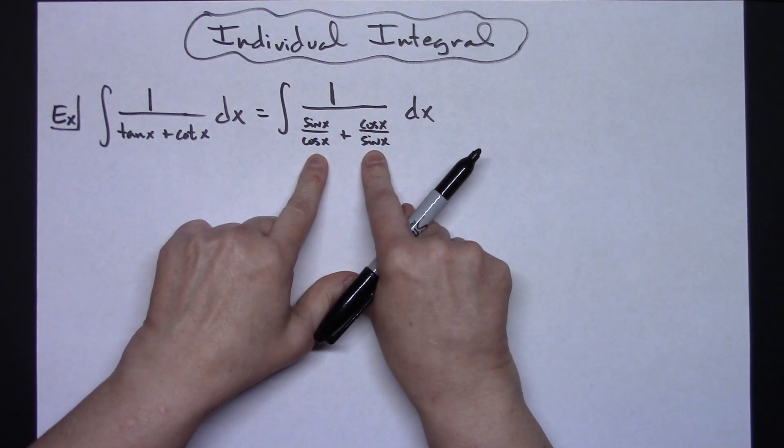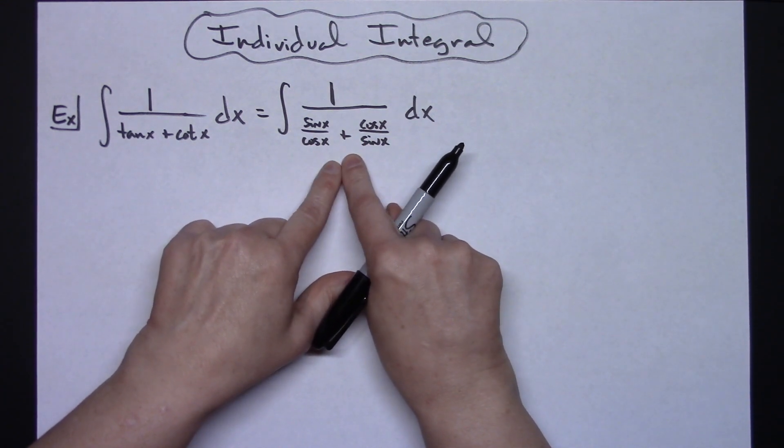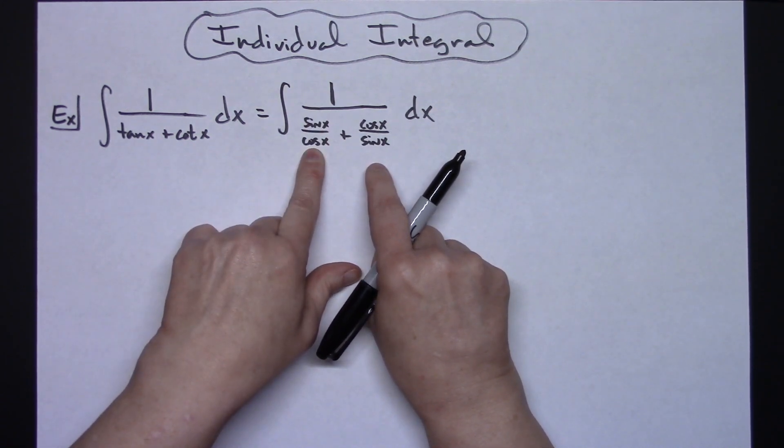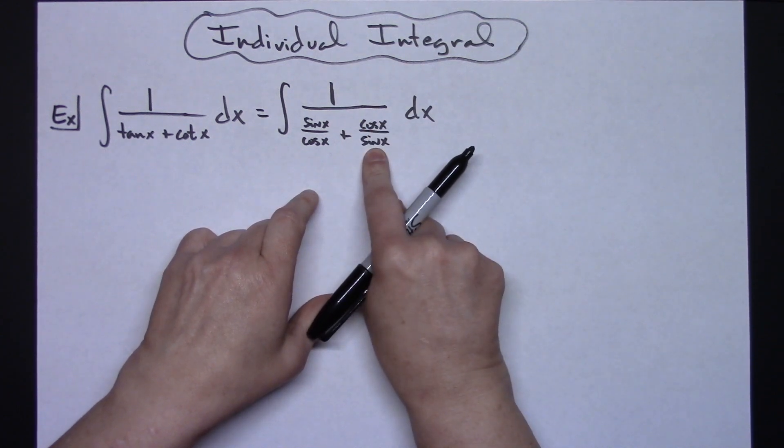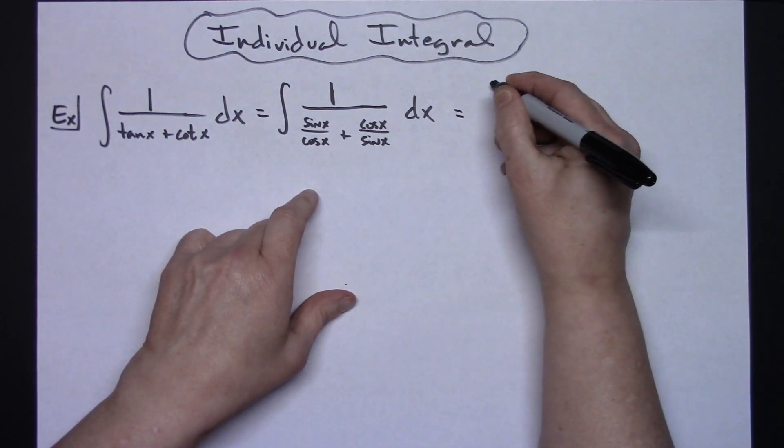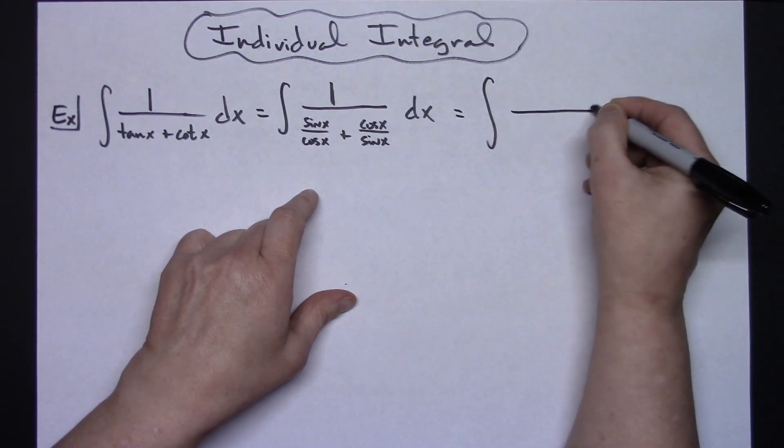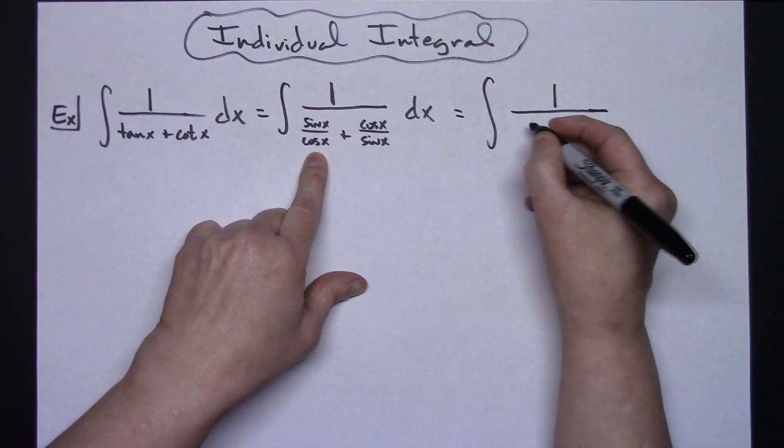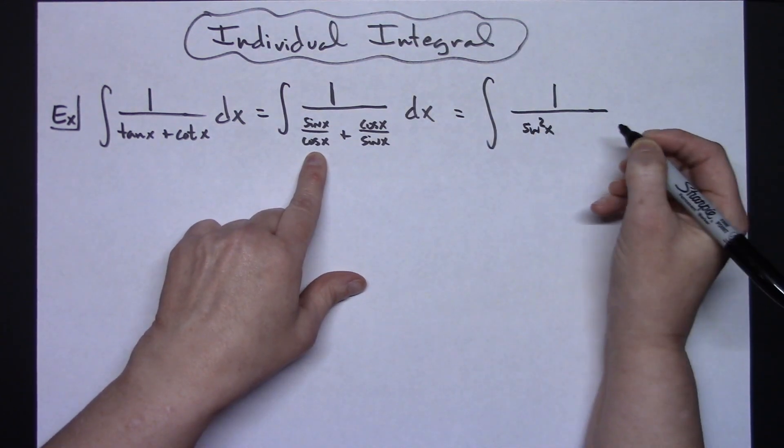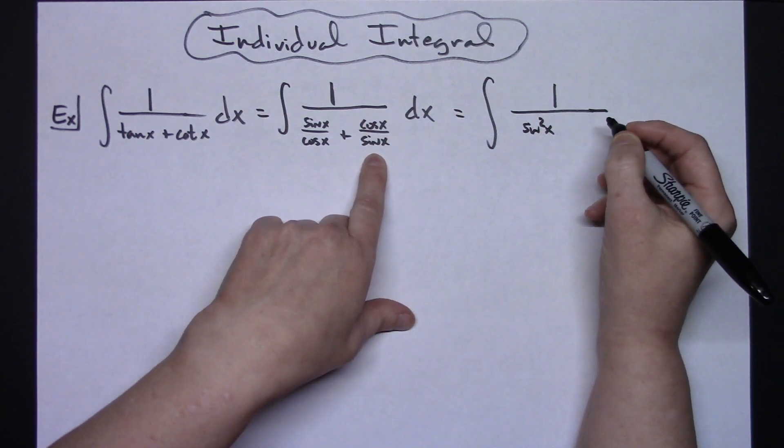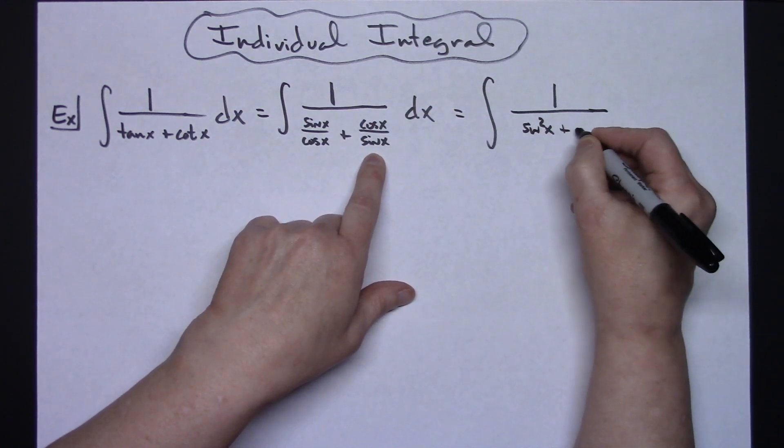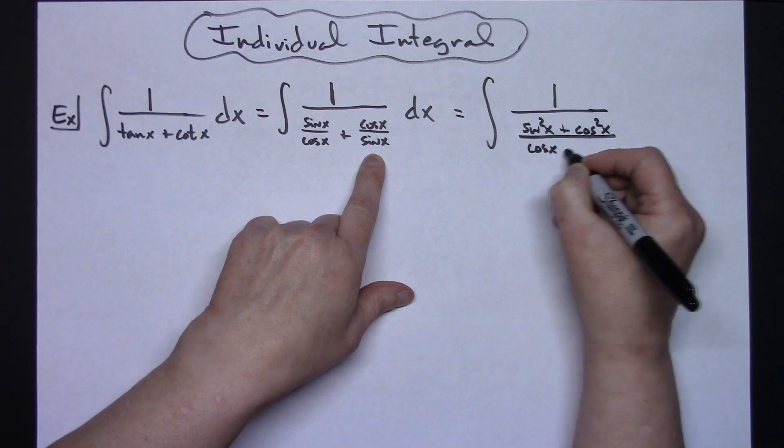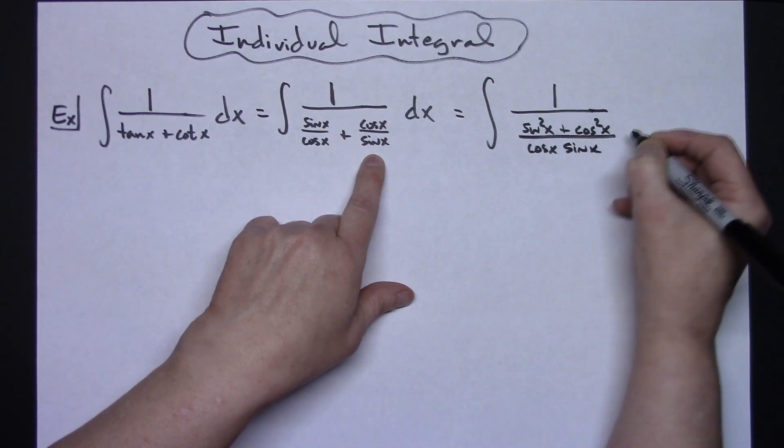Now what I'm going to do is I'm going to take a look at this denominator and I'm going to want to add them together. So I need to get common denominators, this fraction will need to be multiplied by sine x over sine x, this one will need to be multiplied by cosine x over cosine x. So changing that, the one will stay in the top, that will give me if I multiply this by sine x over sine x I'll have a sine squared x, multiplying this one by cosine x over cosine x will give me a cosine squared x in my numerator and then that's going to be all over that cosine x sine x and then dx.